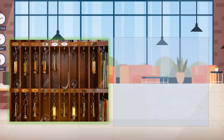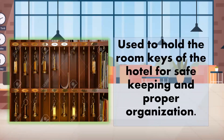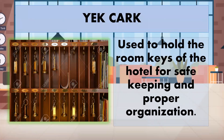The first paraphernalia — anyone who has an idea what this is? It is described as used to hold the room keys of the hotel for safe keeping and proper organization. This is the key rack. As you can see, the key rack is where you place the room keys.